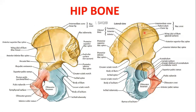This is the hip bone, or the innominate bone. You could see these are both views: the medial view and the lateral view with the acetabulum. The three parts of the bone are the ilium, the pubic part, and the ischium. These three constitute on both sides the hip girdle or the pelvic girdle.